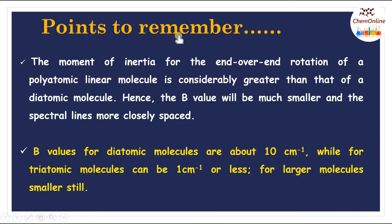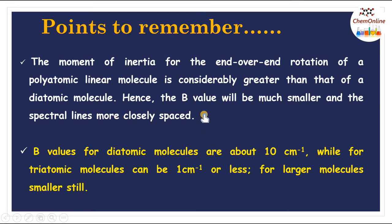A few important points for the rotational spectrum of a linear polyatomic molecule: the moment of inertia for end-over-end rotation of a polyatomic linear molecule is considerably greater than that of a diatomic molecule. Hence, the rotational constant B will be much smaller and the spectral lines will be more closely spaced. For example, B values for diatomic molecules are about 10 cm⁻¹, while for triatomic molecules it can be 1 cm⁻¹ or less, and still smaller for larger molecules.